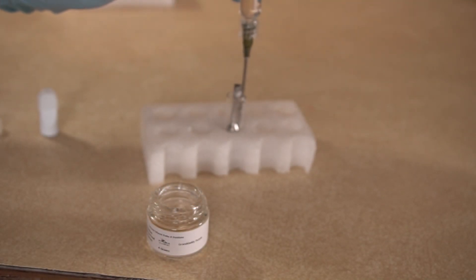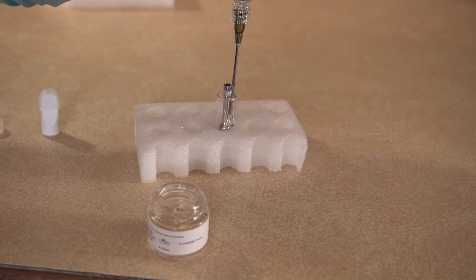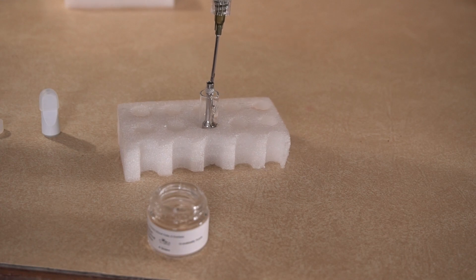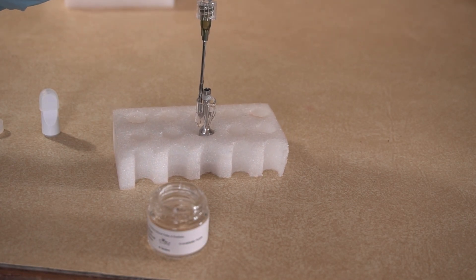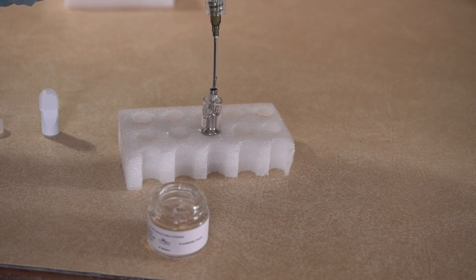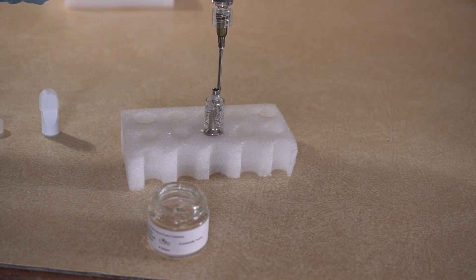Stick your tip down into the cartridge, and since it wasn't heated all the way I like to do a little spin move around the middle rod that way to ensure that the whole cartridge is filled all the way around.